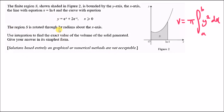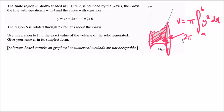They want us to rotate S through 2π radians about the x-axis. Visually, you make a mirror view of the shaded region S and then create a 3D image — that's exactly what we're doing. The volume is given by the formula V = π times the integral from 0 to ln(4) of y² dx.